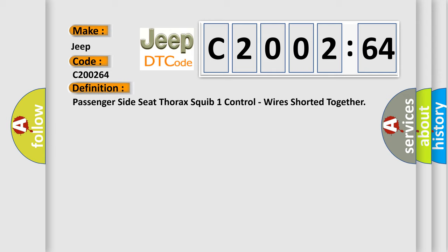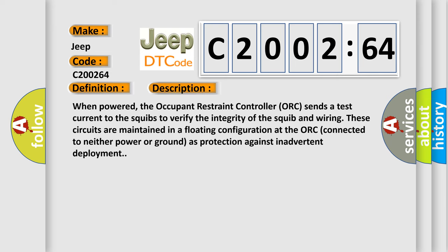And now this is a short description of this DTC code. When powered, the occupant restraint controller ORC sends a test current to the squibs to verify the integrity of the squib and wiring. These circuits are maintained in a floating configuration at the ORC, connected to neither power nor ground as protection against inadvertent deployment.